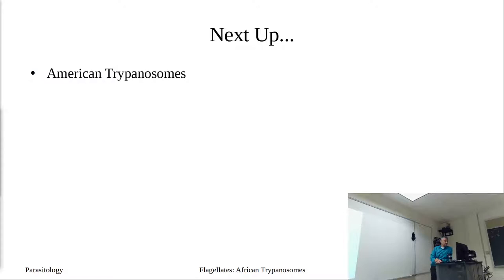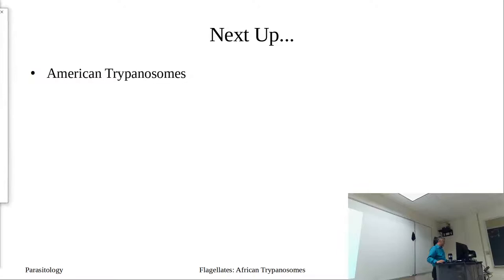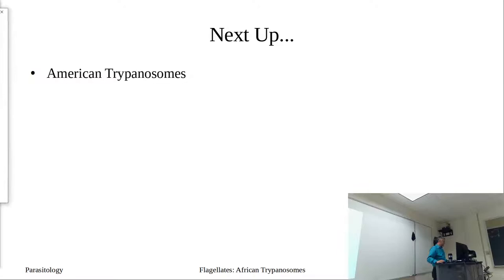Next up are our American trypanosomes — they're different in their life cycle, they don't have VSGs and VATs, and they cause different pathology. I've grouped in Leishmania as well, since the American trips are about eight slides and Leishmania is another eight slides. They're still trypanosomes.